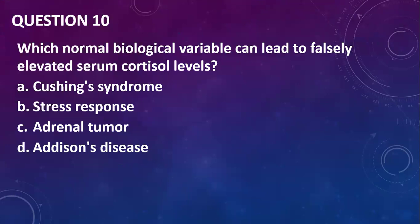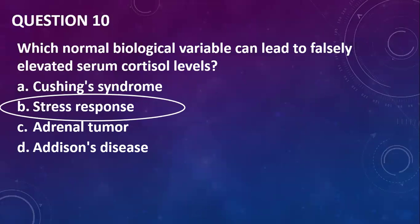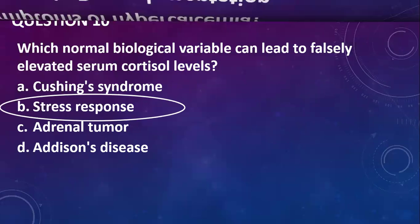Question ten: what normal variable can lead to falsely elevated serum cortisol level? I can tell you it's stress. Like if you're going through exams, if I measure your cortisol level it will be on the high side, but it will come down after the exam. So the answer is stress response.